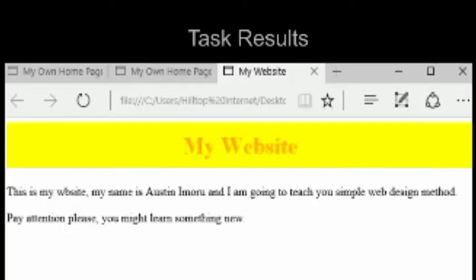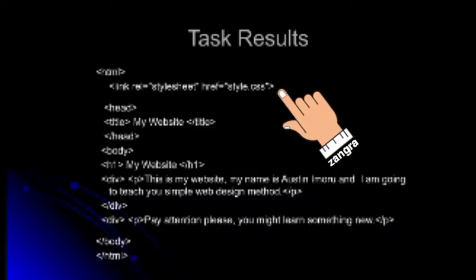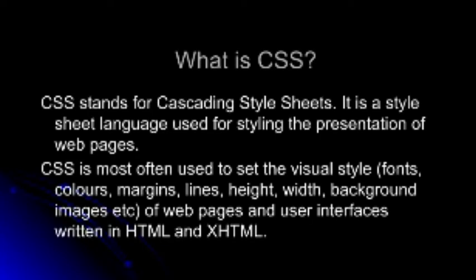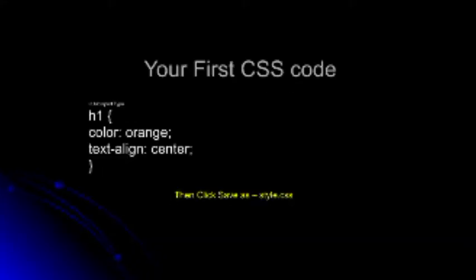Now let's look at basic CSS scripting. If you look at your work you'll notice there was a little CSS — what we call a stylesheet — in there. CSS stands for Cascading Style Sheet. It is a stylesheet language used for styling the presentation of your web page. It adds color, styles the font, creates margins, lines, height, width, background, and images — all these are done with CSS.